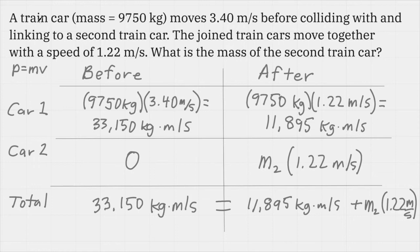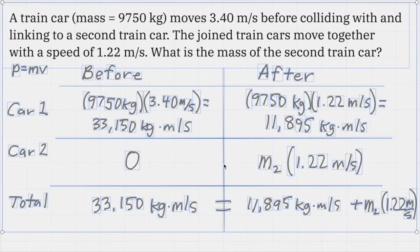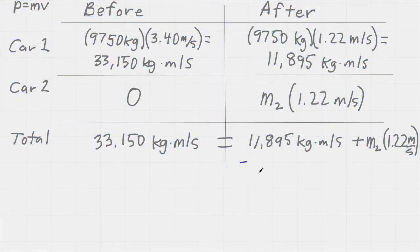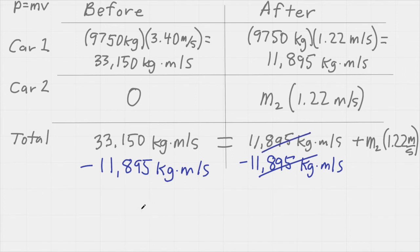Let me give myself a little bit more space. So I'm looking to solve for m2. My first step would be to subtract 11,895 kilogram meters per second from both sides of the equation. That's going to make this part of the equation go to zero. And I'm left with 21,255 kilogram meters per second. That will equal the unknown mass m2 times 1.22 meters per second.